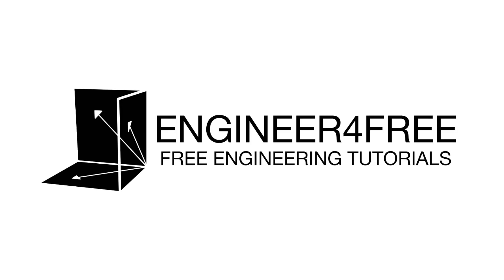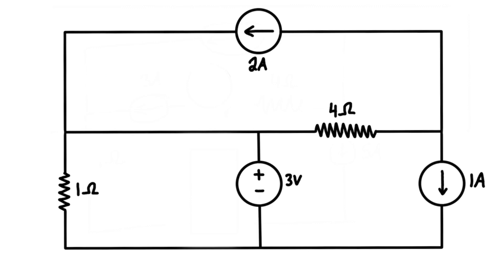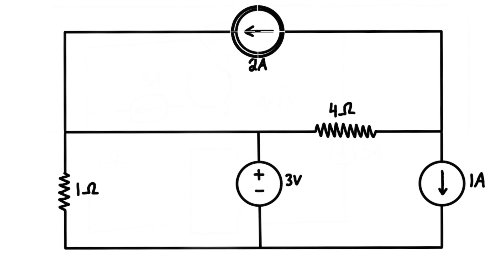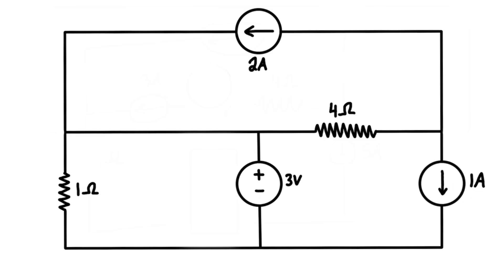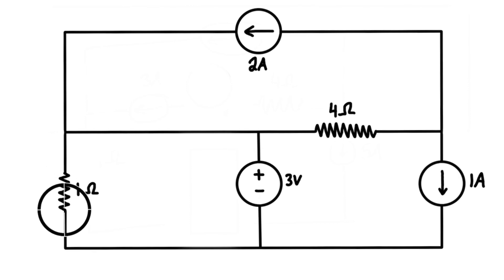Welcome back. In this video we want to take a look at a circuit that has multiple power sources. We have a three volt voltage source, a two amp current source, and a one amp current source. We want to find the current flowing through each of the resistors. At first glance this problem looks super complicated, but we can use some tricks with Ohm's law and Kirchhoff's current law to relatively quickly solve this problem.